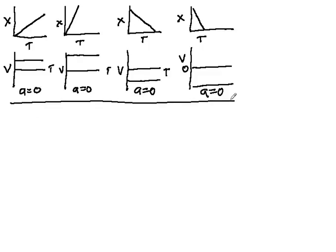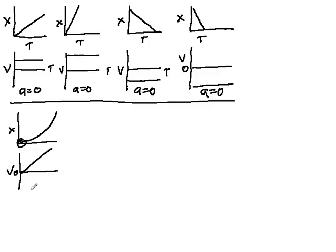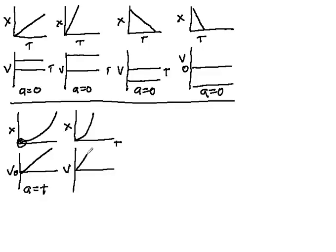Now let's do some conditions where velocity is changing. If I have a position versus time graph that slopes upward as a curve, I can see that near the start the slope is almost zero, so velocity starts near zero. Over toward the end I have a high positive slope, so velocity becomes positive. The rate of change of velocity is positive, meaning positive acceleration. If the curve swoops up more rapidly, the slope of the velocity versus time graph is greater, giving a more positive acceleration than the previous case.